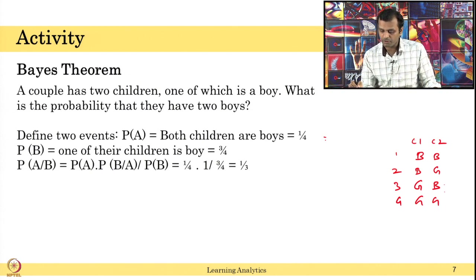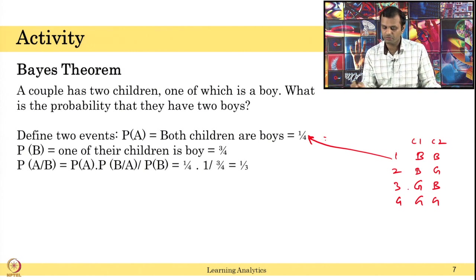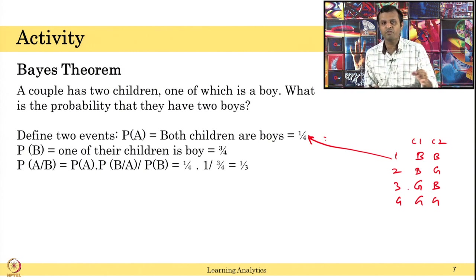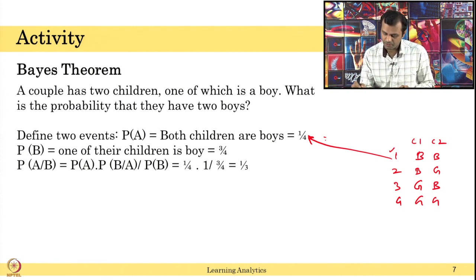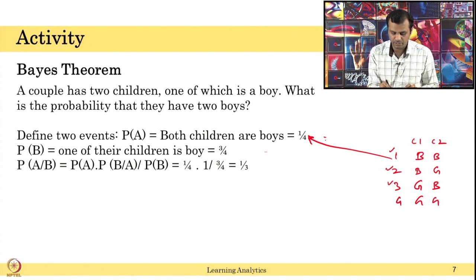Given there are four possible outcomes, being both boys is one. That is why it is one by four — this is the probability of both being boys. Probability of one child being a boy: here at least one child is a boy, and here also one child is a boy — at least one child is a boy out of four events. There are three times this one child can be a boy, so that is three by four.